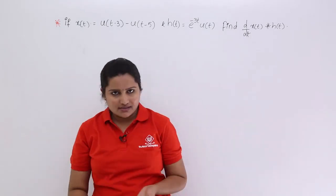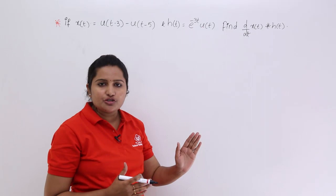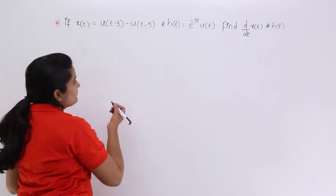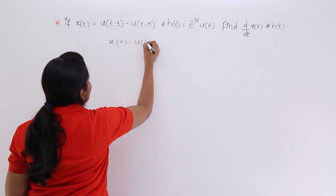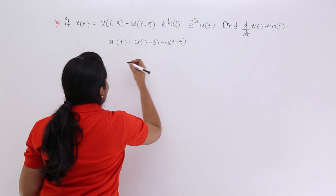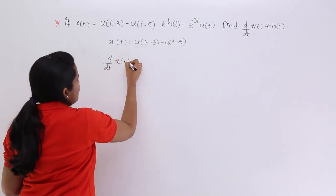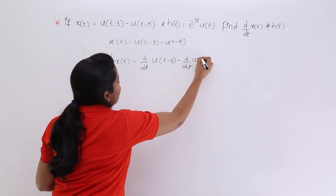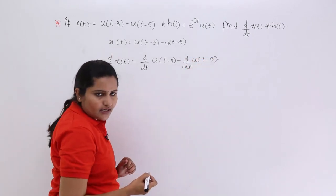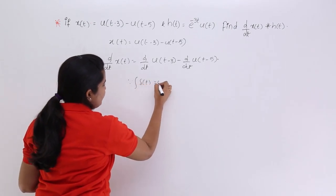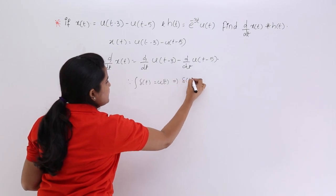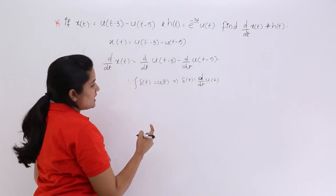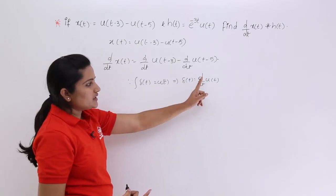Here they have given the signal and impulse response. We need to find out the convolution of the differentiation of the signal with the impulse response. I am going to find d/dt of x(t) first. x(t) is given as u(t-3) minus u(t-5), so we need the differentiation of both unit steps: d/dt of u(t-3) and d/dt of u(t-5). As you know, since the integral of δ(t) is equivalent to u(t), by this you can write δ(t) = d/dt of u(t).